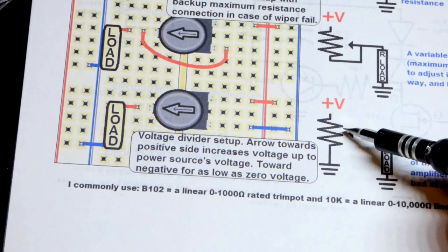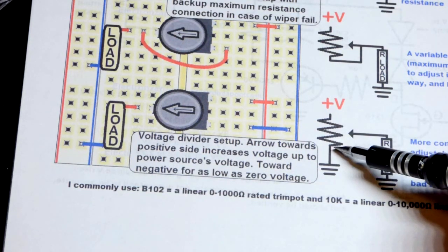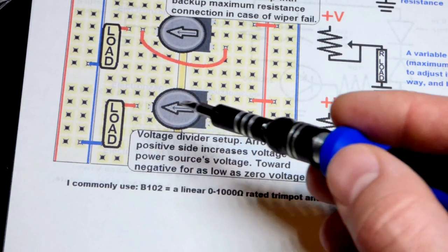So it's two equal value fixed resistors basically. You tap into the middle of two equal value fixed resistors and you get half the power supply voltage.